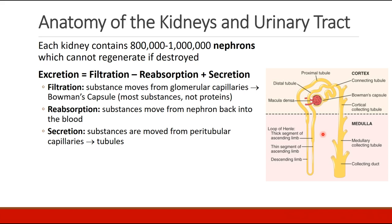The kidney is responsible for excretion of substances, and excretion is a combination of three processes: filtration, which is substance moving from the glomerular capillaries into Bowman's capsule; reabsorption, which is substances moving back out from the nephron into the blood; and secretion, which is additional movement of substances from the peritubular capillaries into the renal tubules. These three processes summed together equal excretion.